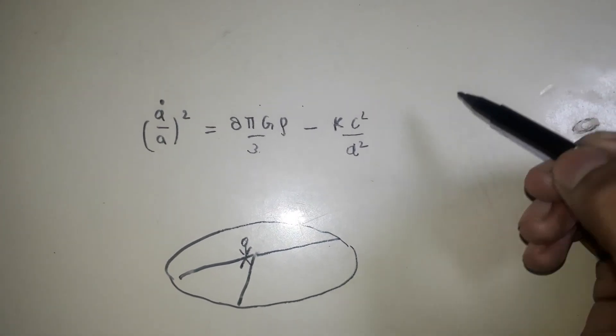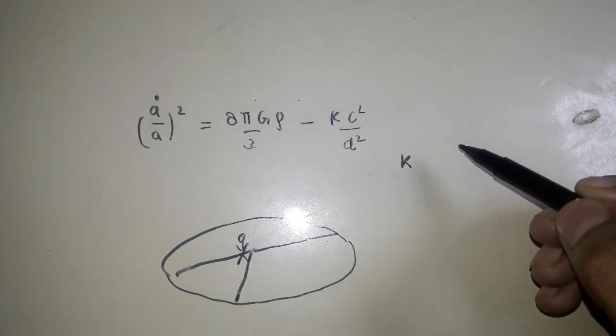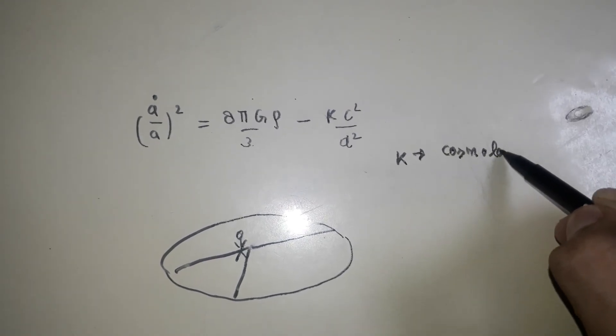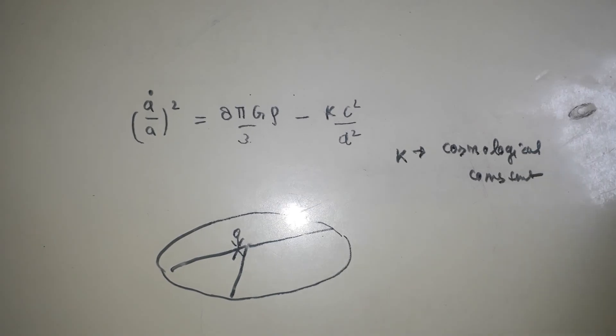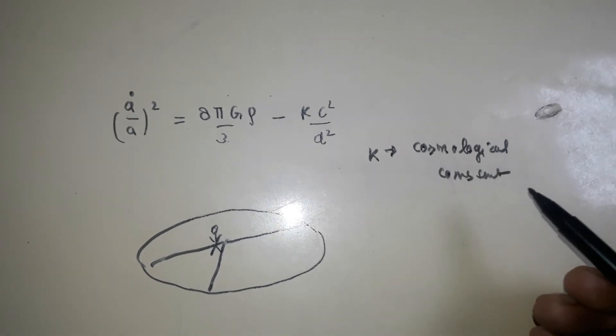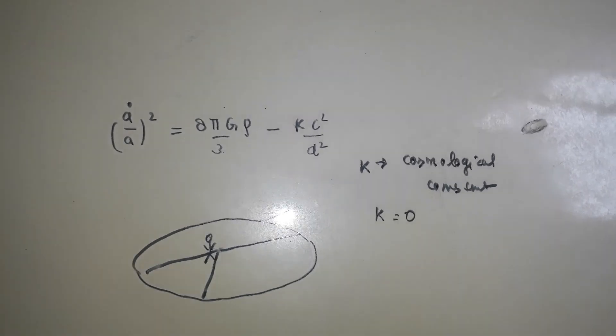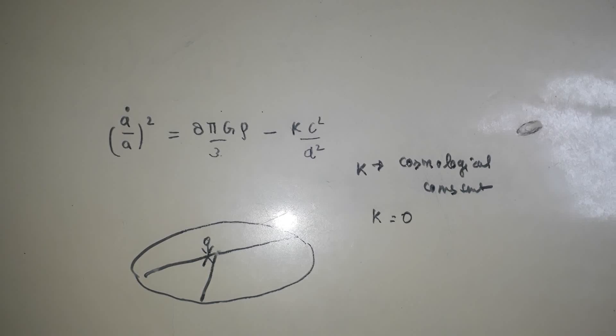So for our universe, the K, we call K the cosmological constant. K is equal to zero. For our universe, the K is equal to zero, which means that we live in a flat universe.